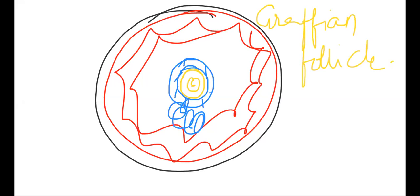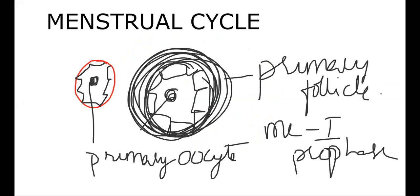In the Graafian follicle we have theca externa, theca interna, then membrana granulosa. The fully mature Graafian follicle structure includes cumulus oophorus, corona radiata, zona pellucida, and finally the secondary oocyte. This is the story of follicular development we learned earlier.